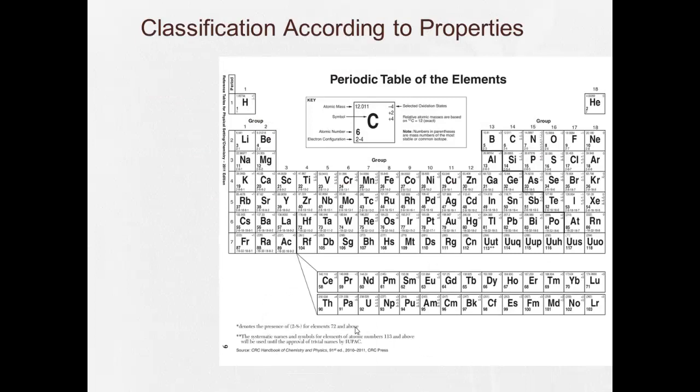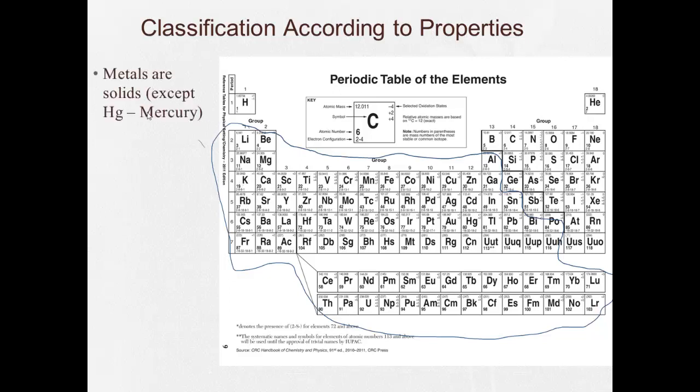So, the basic periodic table can kind of get divided here. When we look at the periodic table, all of these, including these right along here, most of the periodic table are going to be metals. Now, most of these metals, or all of these metals, are going to be solid at room temperature, except for right here, mercury.